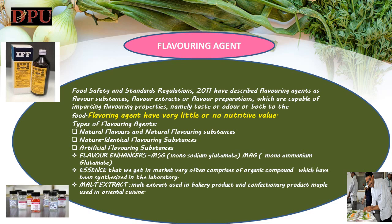Flavor enhancers are compounds which help in improving the taste of food. Example: MSG (Monosodium Glutamate) and MAG (Monoammonium Glutamate) are used to improve the taste of bland soups, stews and gravies. Essences found in the market often comprise organic compounds which have been synthesized in the laboratory. Examples: vanilla essence, strawberry essence, smoke essence etc. Malt extract is sugar extracted from malted grain; it comes in two forms — liquid malt extract (LME) and dry malt extract (DME). LME is a thick, sugary syrup and DME is a dry powder. Malt extract is used in bakery and confectionery products.